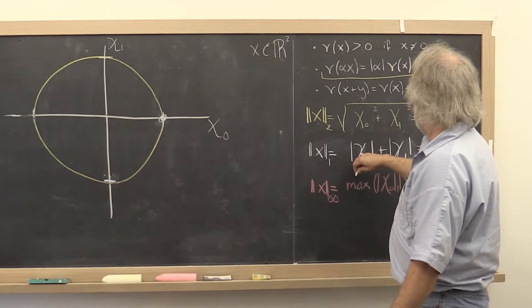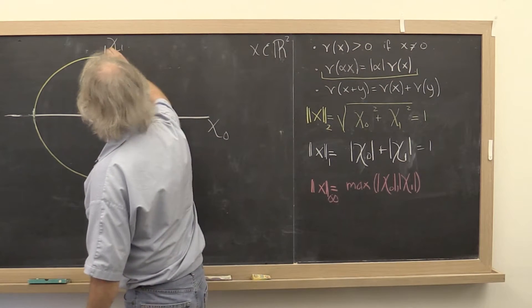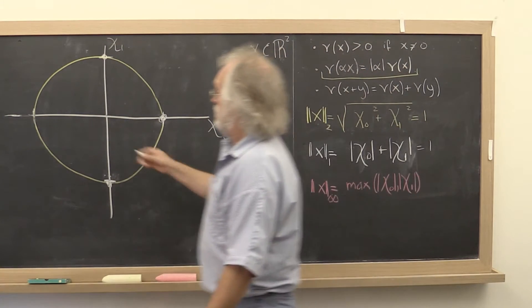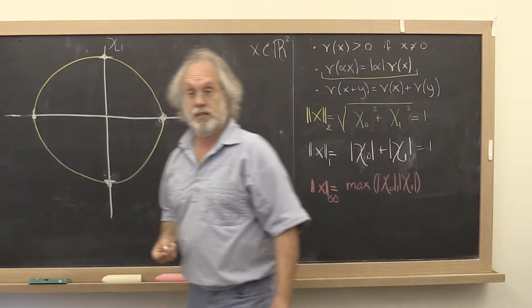And if chi0 is equal to 0, then chi1 can be either 1 or minus 1. And of course, by the same reasoning, we see that the point minus 1, 0 is also going to be in that set.